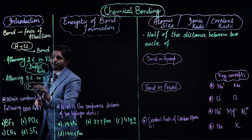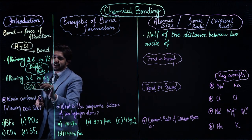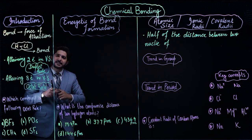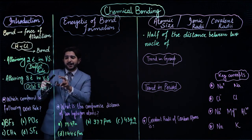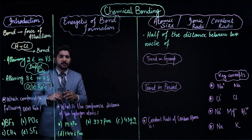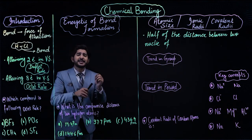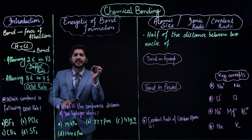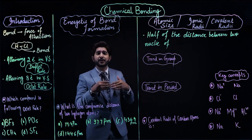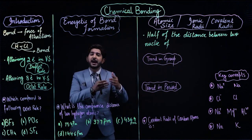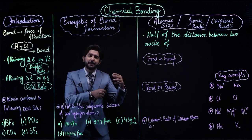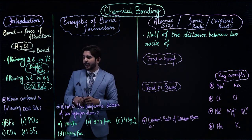Both the duplet and octet rules indicate that an atom is stable — these are stability rules. Noble gases follow both rules, that is why noble gases are called inert gases. Inert gases means less reactive gases, because they have completely filled outer shells, making these elements inert.